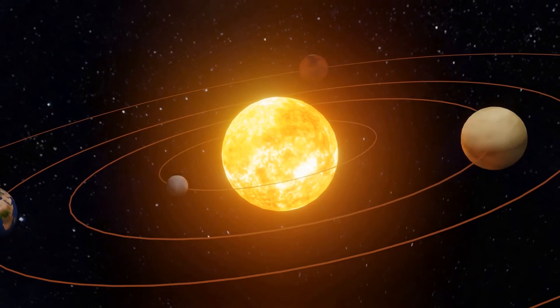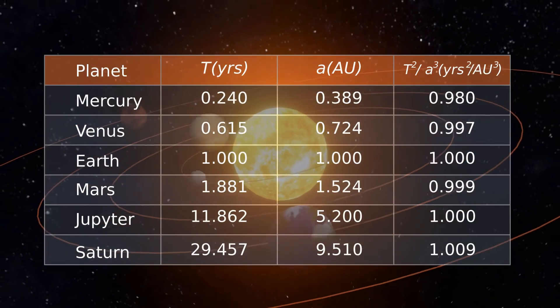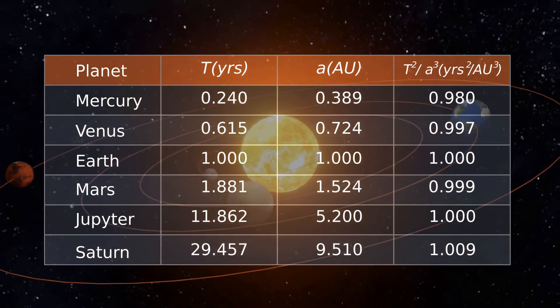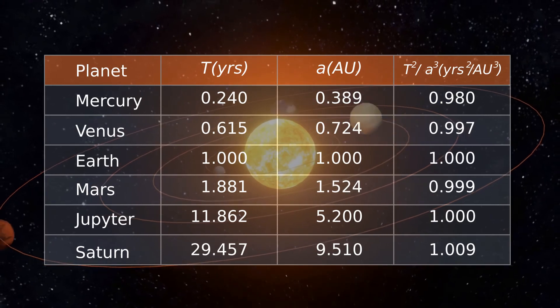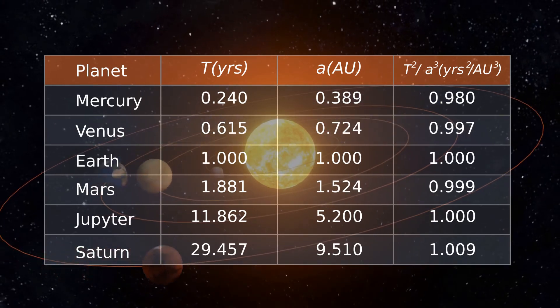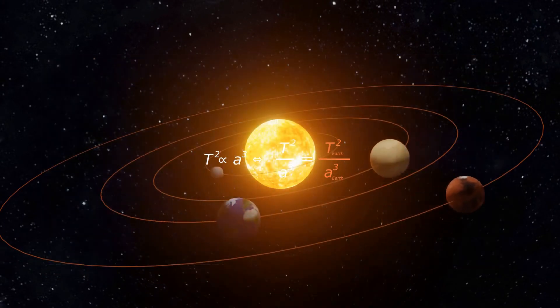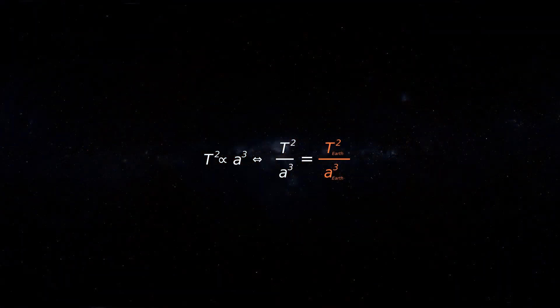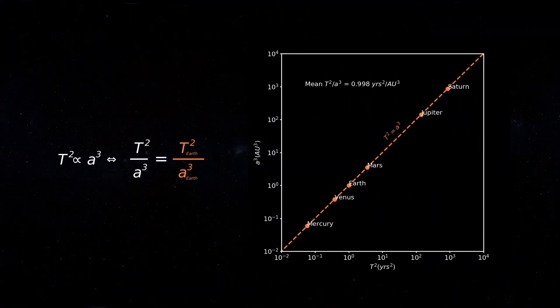Kepler also made an incredible observation. The square of the orbital period T², that is, the time for one complete cycle around the Sun, is proportionate to the cube of semi-major axis a³. This means if we draw a graph of T² against a³, it would be a straight line.